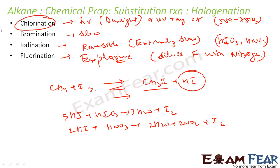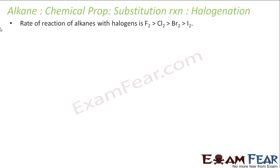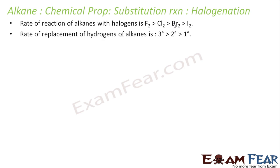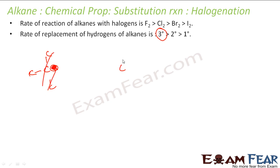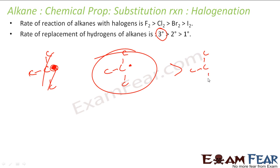Fluorination is pretty explosive so generally we talk about chlorination only. The reactivity order is: fluorination is the most reactive (almost explosive), then chlorination, then bromination (slow), and then iodination (extremely slow). Regarding hydrogen replacement in alkanes, tertiary (3°) carbon hydrogens are more easily replaced because the tertiary free radical intermediate is more stable, while secondary and primary free radicals are progressively less stable.